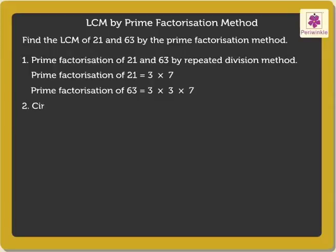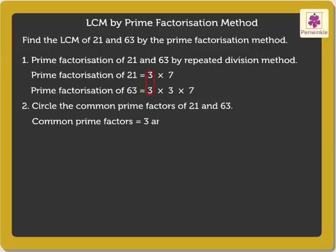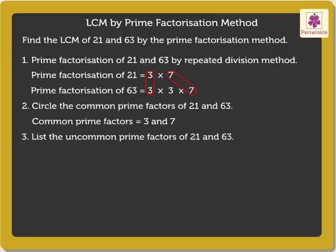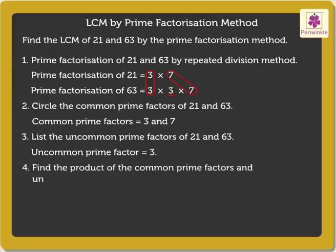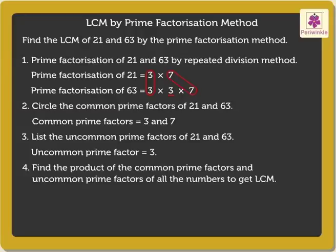Now let us circle the common prime factors of 21 and 63. Here, the common prime factors are 3 and 7. Next, list the uncommon prime factors of 21 and 63. The uncommon prime factor is 3. Lastly, we find the product of the common prime factors and uncommon prime factors of all the numbers to get the LCM. Thus, LCM of 21 and 63 is equal to 3 × 7 × 3, which equals 63.